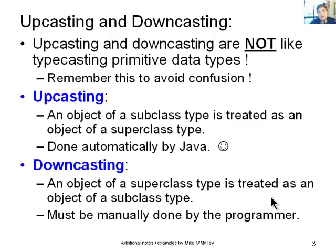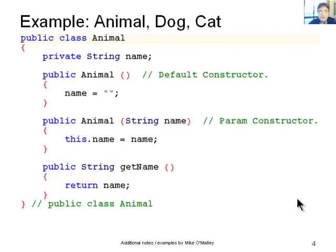So upcasting is where you have an object of a subclass type that's treated as an object of a superclass type, and that's done automatically by Java. And then you've got downcasting. That's where an object of a superclass type is treated as an object of a subclass type, and that's got to be done manually by the programmer. So there's upcasting and downcasting. It depends on which way you're going up the hierarchy.